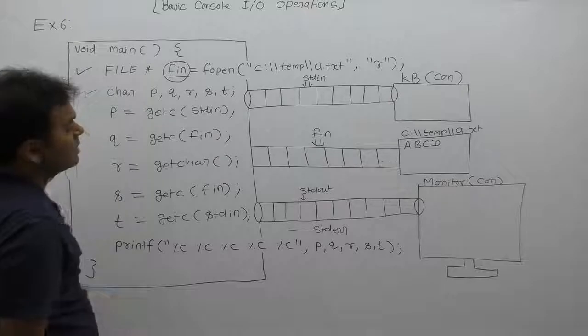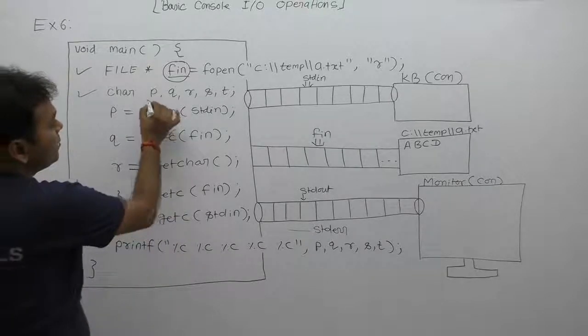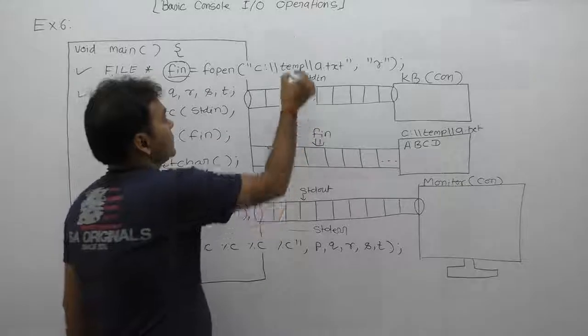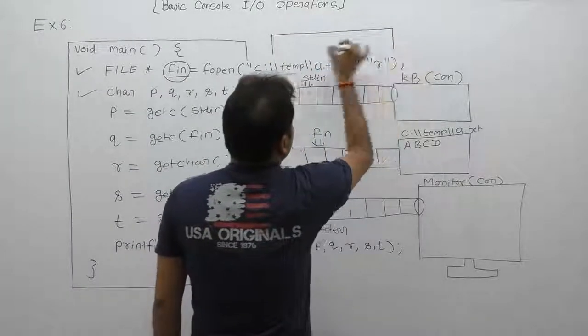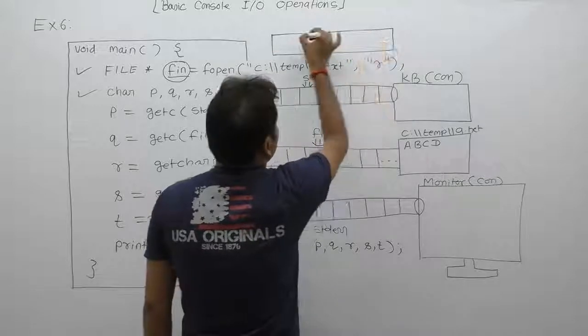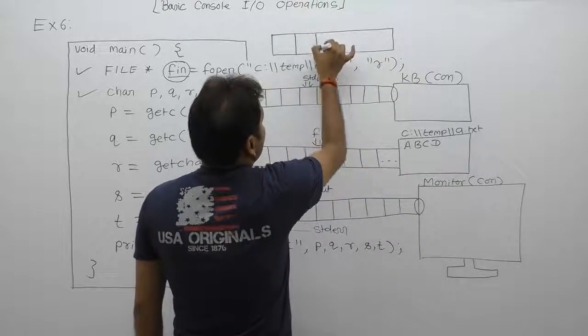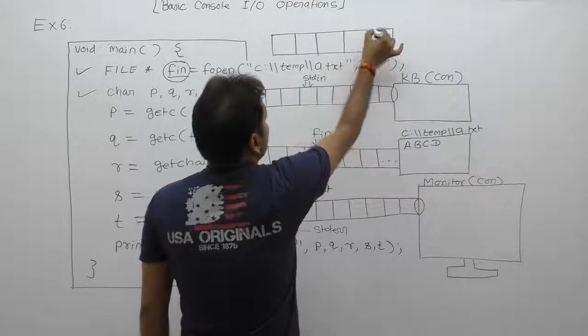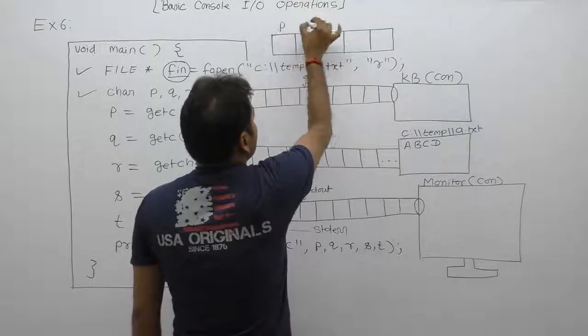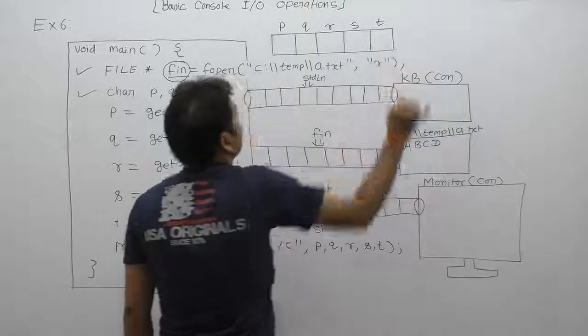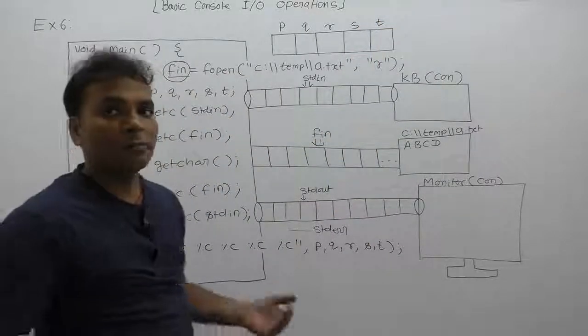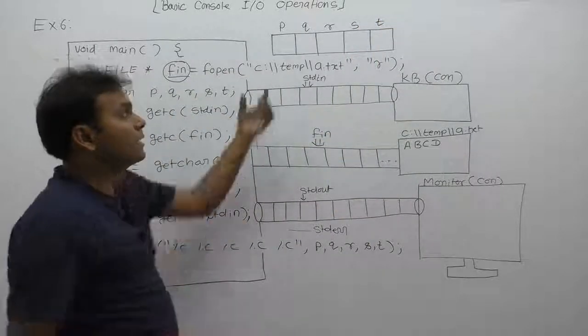We are declaring five local variables p, q, r, s, t. Therefore, allocating memory space for local variables p, q, r, s, t with the initial value garbage. We are not highlighting garbage, we are relating garbage.